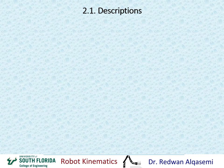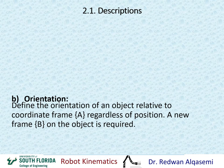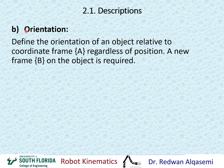We just completed talking about position only of points, and now we're going to talk about orientation. When we have only orientation, we define the orientation of an object relative to coordinate frame A, regardless of position.